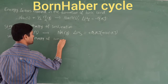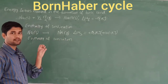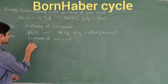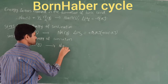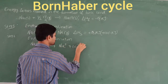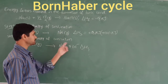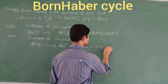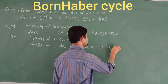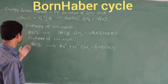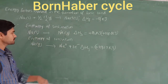The second step is the enthalpy of ionization. This is the energy required to remove one electron from one mole of gaseous sodium. This process is denoted as delta H_i, with a value of 492.7 kilojoules. After this step, we obtain Na⁺ in gaseous form.